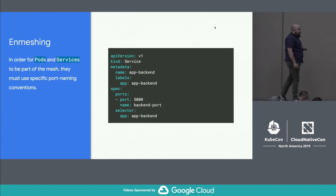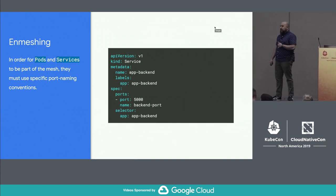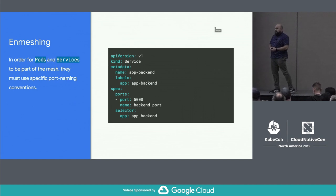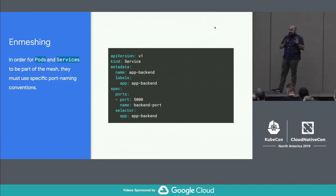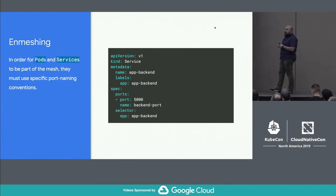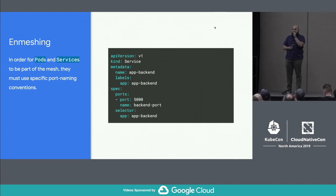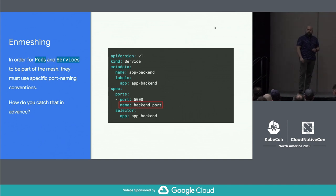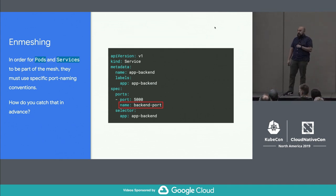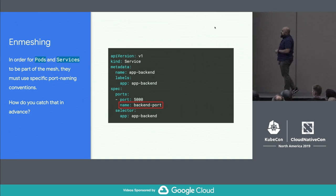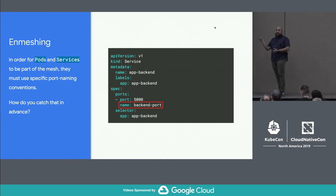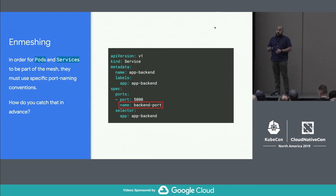I'm going to talk through a few examples of structural problems you can run into with Istio. One of the first is: there's a requirement in Istio that if you want your pods and services to be picked up by the service mesh, you have to follow a very specific port naming convention in your service port. You have to label it with the protocol as the prefix — HTTP, gRPC, TCP, and so on. If you deploy a service without following that convention, it won't be able to use any Istio routing rules. So this is something we want to catch and audit.